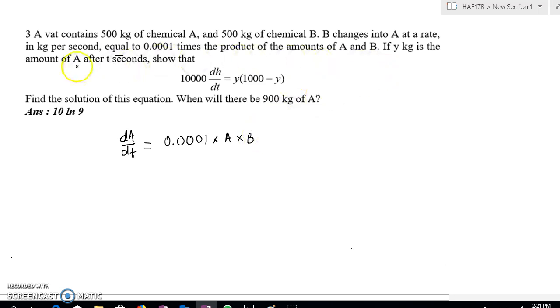But if you look carefully here, Y represents A. So correctly the equation should look something like this: dY/dt equals to this. Let's put this as 1/10,000. A is Y.